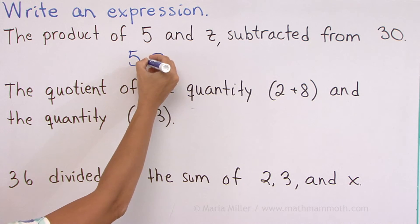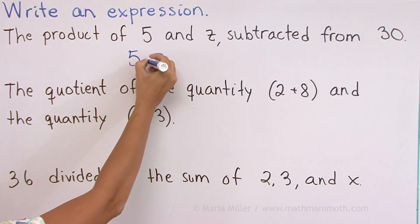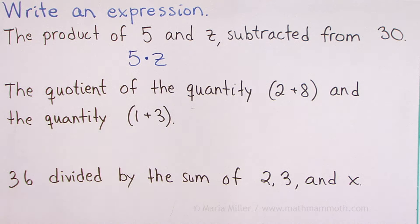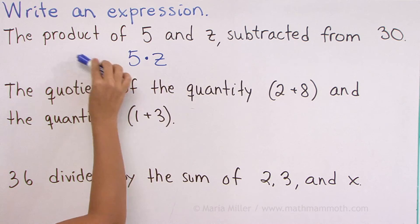5 times z. Now, notice I'm not going to write that little x sign for multiplication. Because it could be confused with the letter x. So, I'm going to write a raised dot here. And then subtract it from 30.